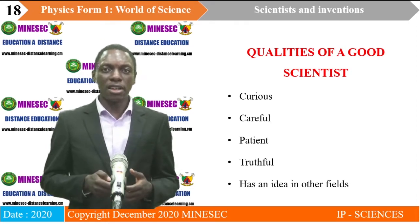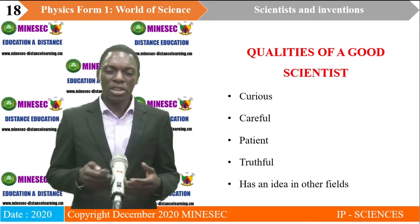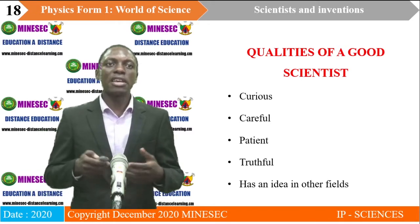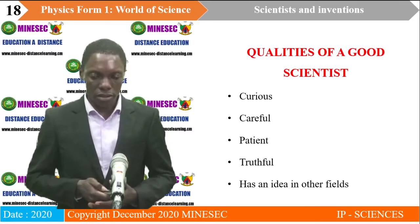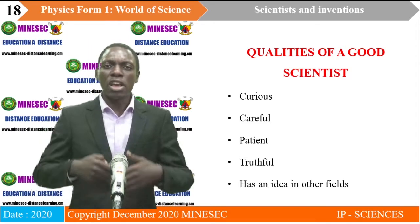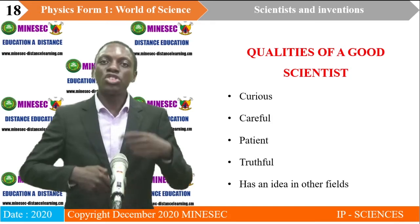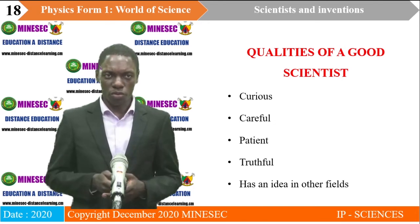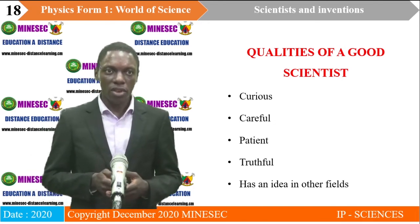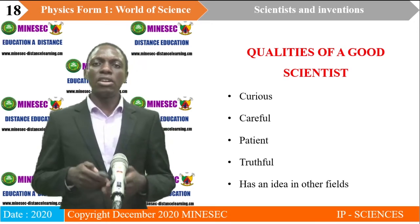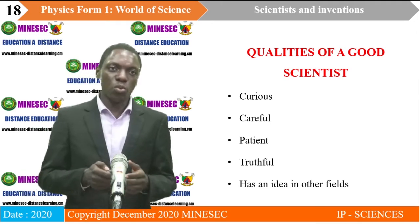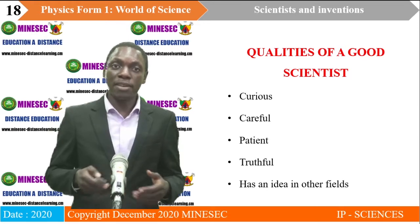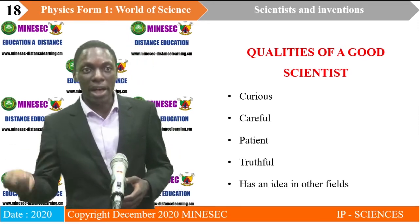A good scientist is careful and doesn't make many mistakes. A good scientist is patient — if he fails the first time, he doesn't give up, but keeps trying until he gets a result. A good scientist is truthful and doesn't tell lies. A good scientist also has ideas in other fields; like a good scientist in physics should have knowledge in chemistry and biology.